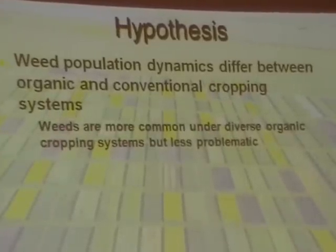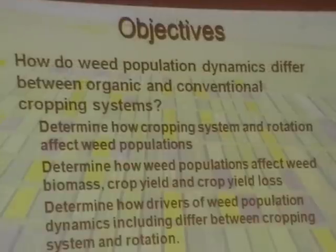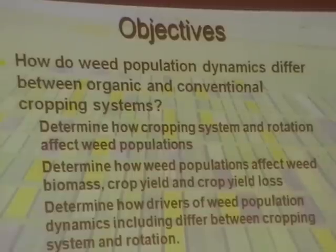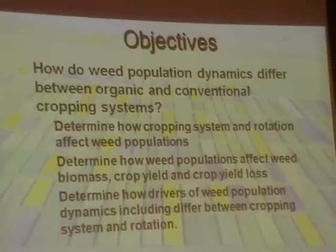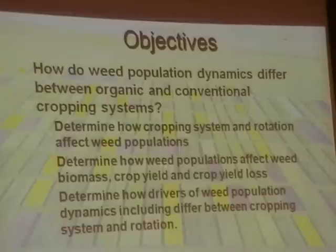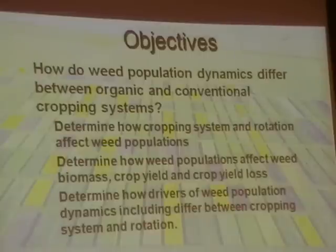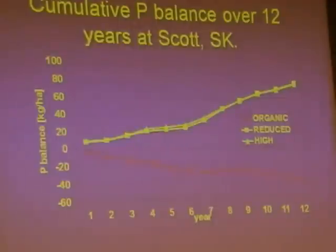We have some hypotheses we're going to test. Our objectives are: how do weed population dynamics differ between systems? That's the obvious objective. How does cropping systems rotation affect this? How do weed populations affect biomass, crop yield, and crop yield loss? We've looked a little bit at this already. And how do the drivers of weed population dynamics differ between systems and rotation?